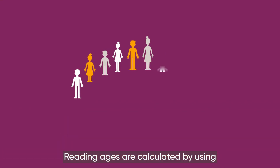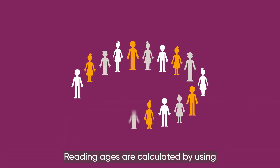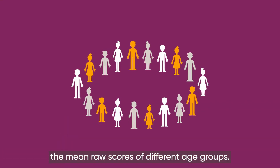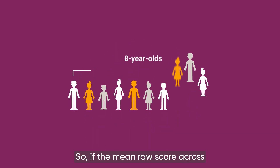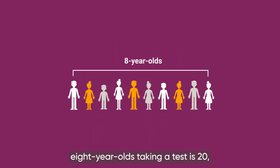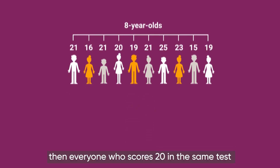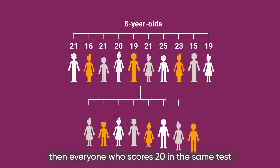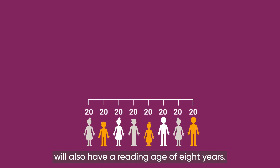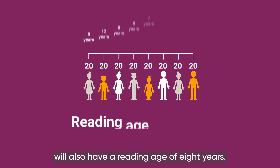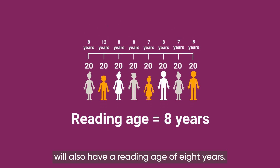Reading ages are calculated by using the mean raw scores of different age groups. So if the mean raw score across 8 year olds taking a test is 20, then everyone who scores 20 in the same test will also have a reading age of 8 years.